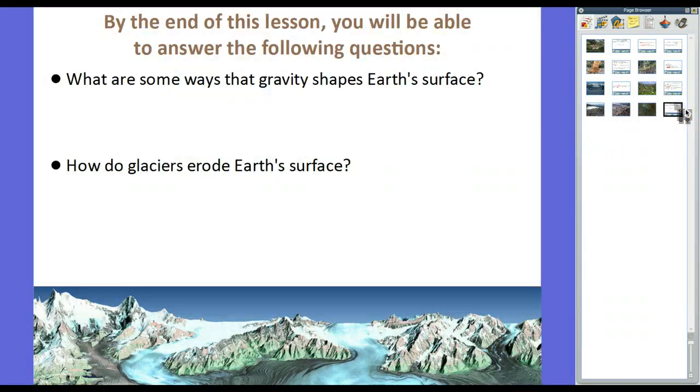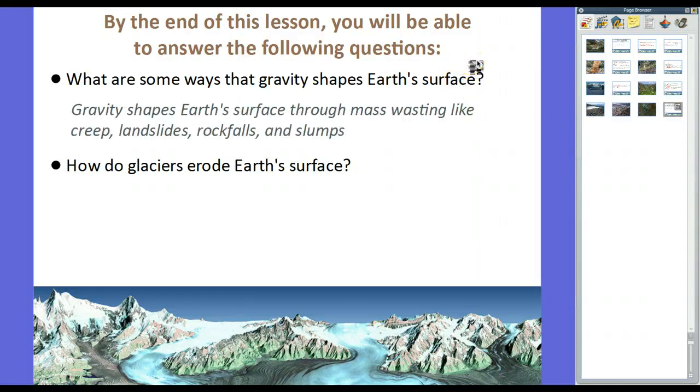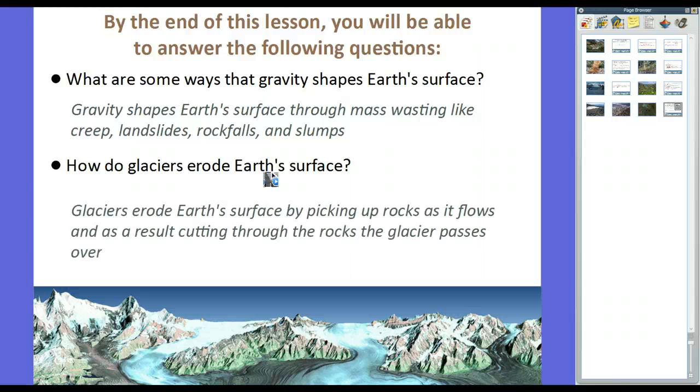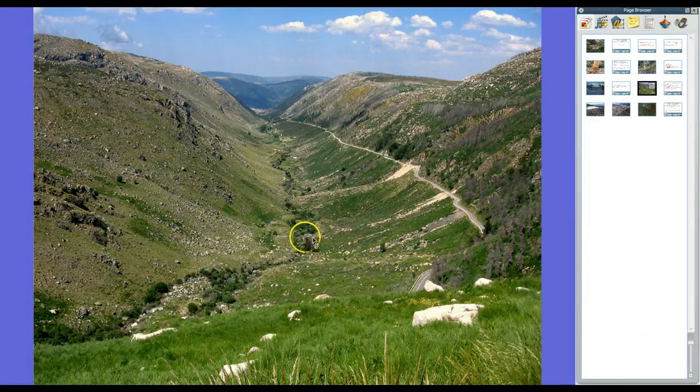And the further north you go with the continental ice sheets, you'll see things like this. Or in alpine areas, you'll see it like in these pictures right here. So that's your lesson right here on mass wasting and glaciers. By the end of this lesson, you would have been able to answer the following questions. What are some ways that gravity shapes Earth's surface? Well, gravity shapes Earth's surface through mass wasting, like creep. That's where the mass wasting pulls down very slowly. And what happens, it'll go quickly in landslides, rock falls, and slumps. Now, how do glaciers erode Earth's surface? Well, they erode the Earth's surface by picking up rocks as it flows, and as a result, cutting through the rocks the glacier passes over. And it generally will make U-shaped valleys like this.